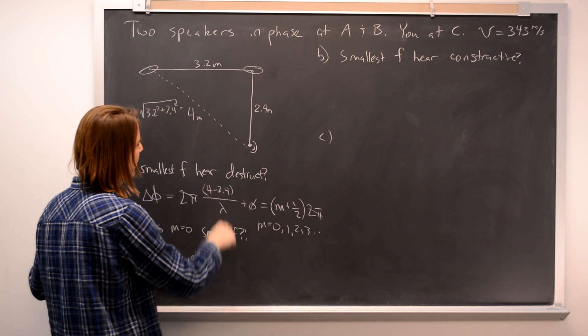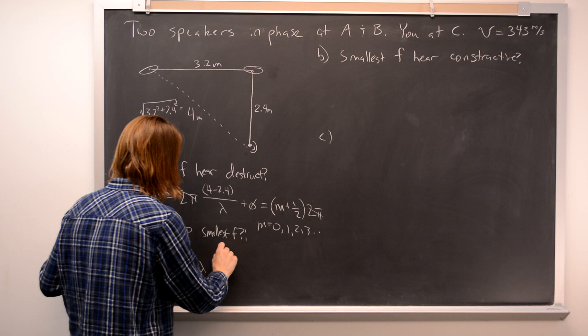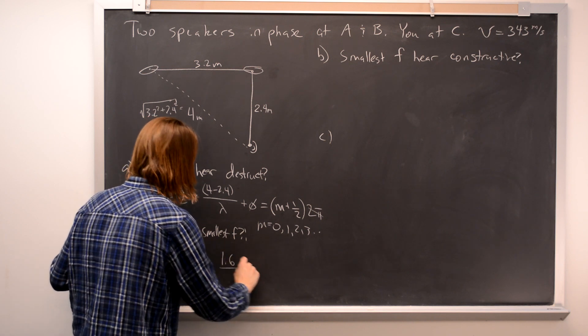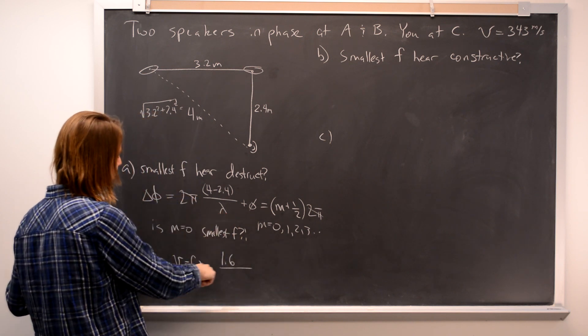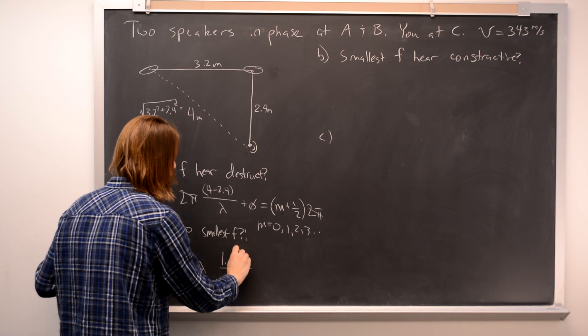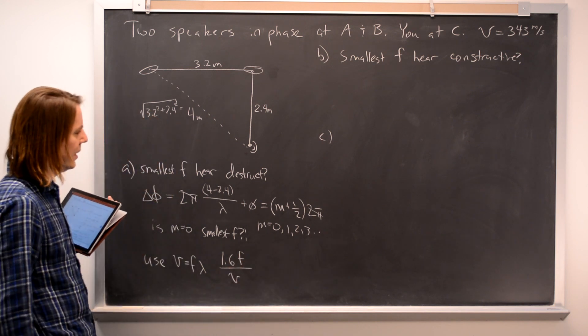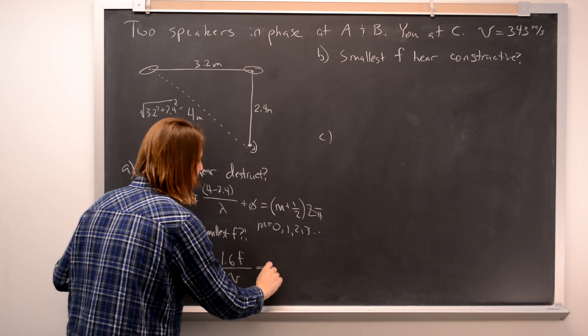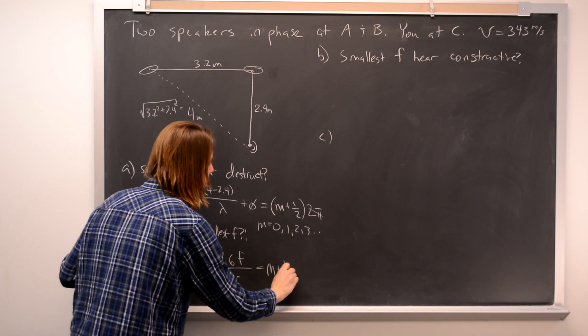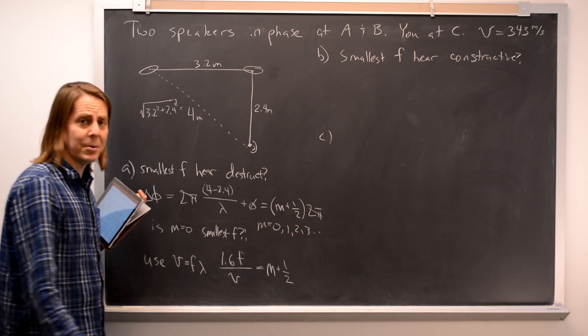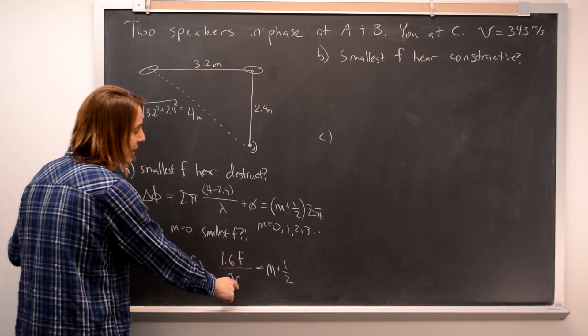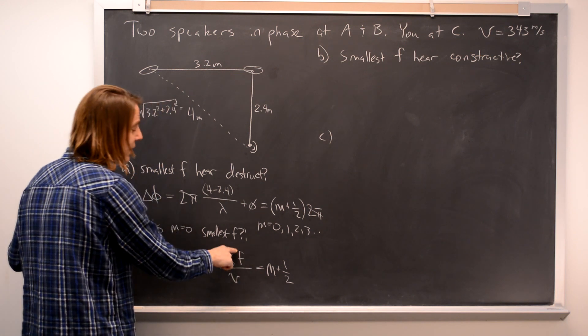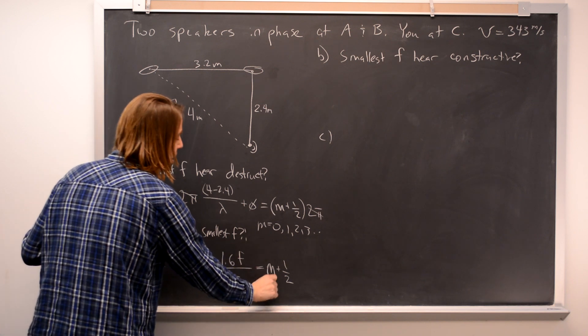Let's go ahead and cancel the 2π out of there. And let's call that 1.6. And lambda is V over F. So we'll go ahead and put our V down here and our F up there. 0 is there. That equals M plus 1/2.